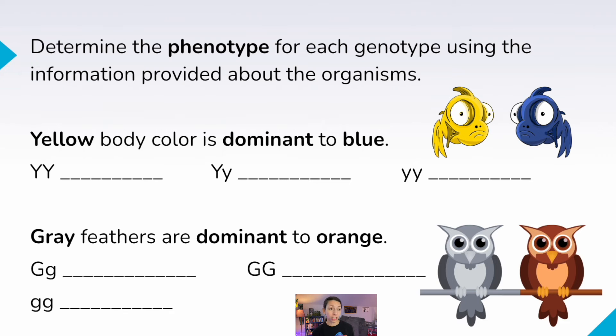Determine the phenotype for each genotype using the information provided about the organisms. So I want you to tell me what the phenotype is, what their physical characteristic is based on the information provided and the genotypes. Big Y, big Y is yellow because it's two dominant alleles. Big Y, little y is still yellow because that big Y masks the little y allele, giving us a yellow phenotype. And then little y, little y is blue. The recessive phenotype, you need two recessive alleles for that.